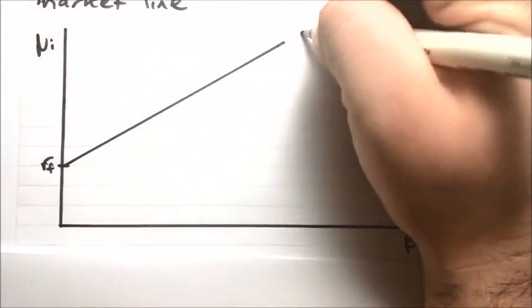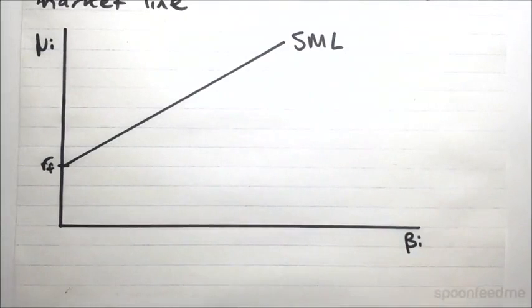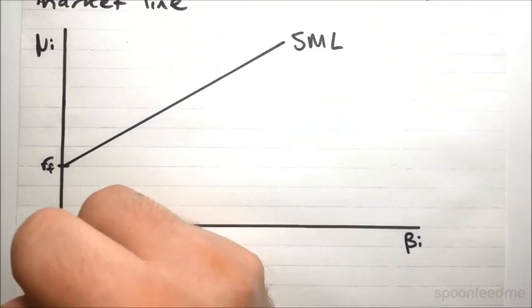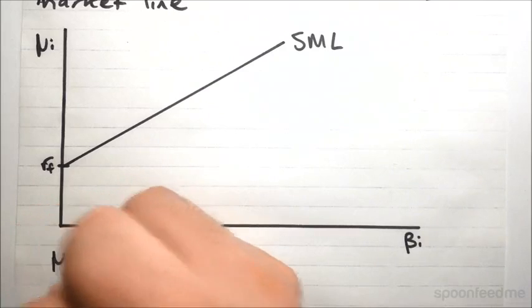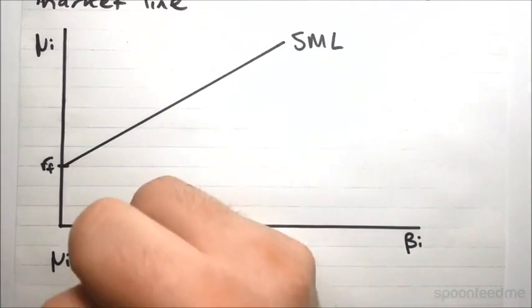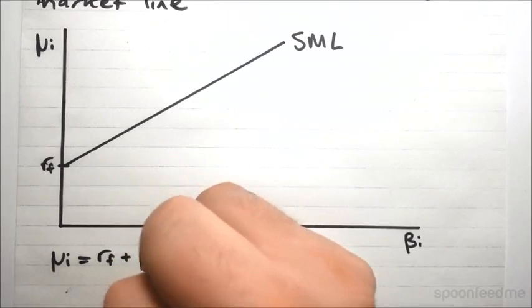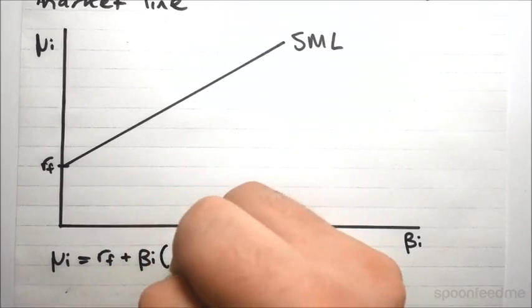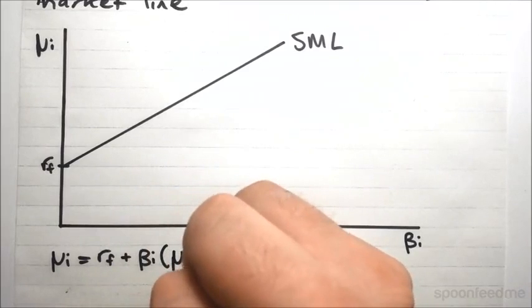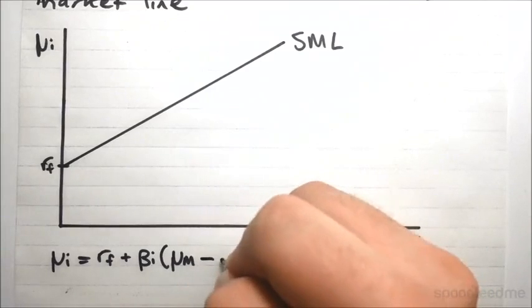So this is our security market line, and it's represented by the following equation. The expected return on a security equals the risk-free rate plus the beta value multiplied by the expected return on the market portfolio minus the risk-free rate.